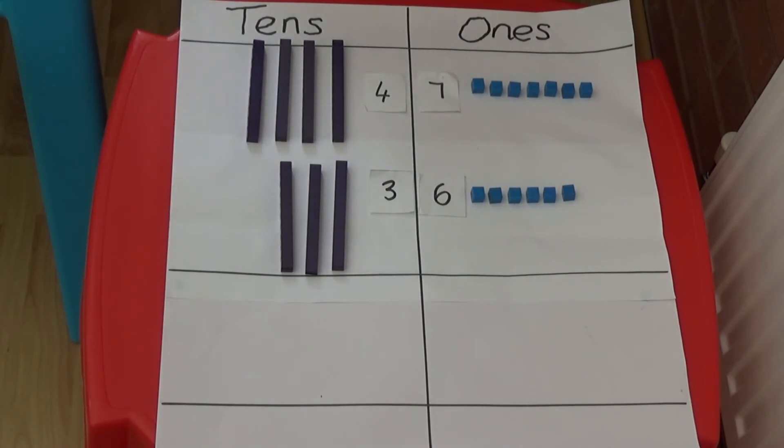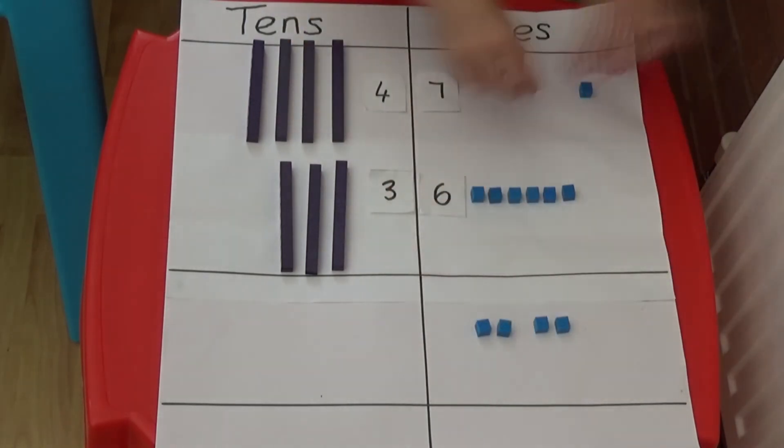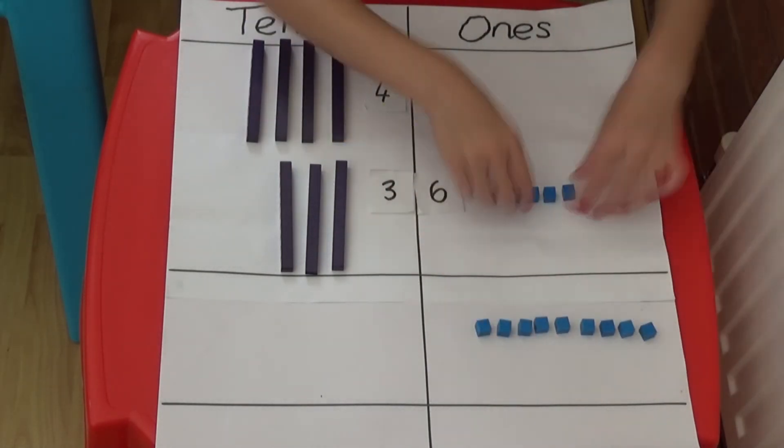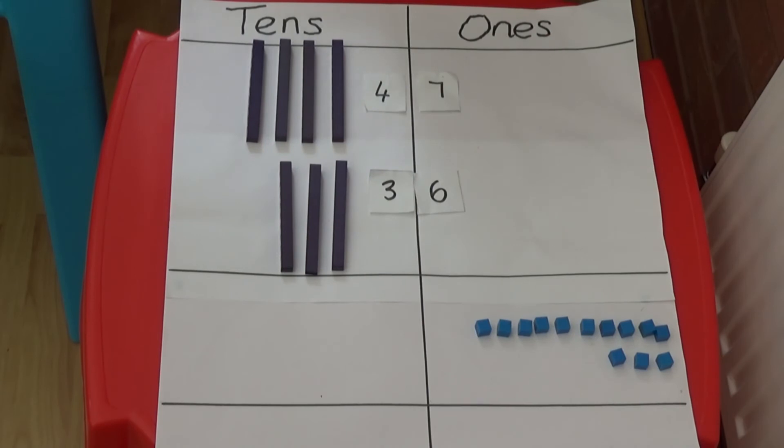First I'm going to add together the seven and the six ones. Seven add six equals 13. We can't have 13 ones in the ones column. So I'm going to exchange ten of my ones for a tens rod and place it in the tens column under the answer box.